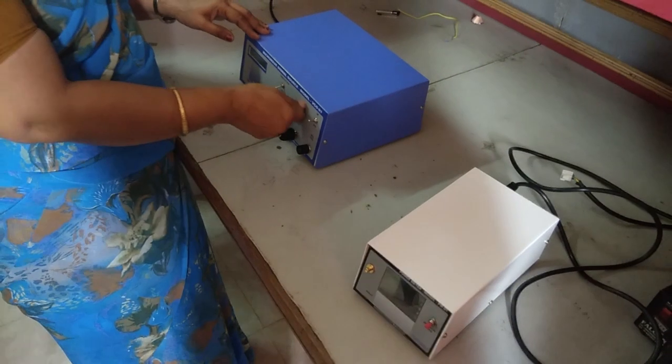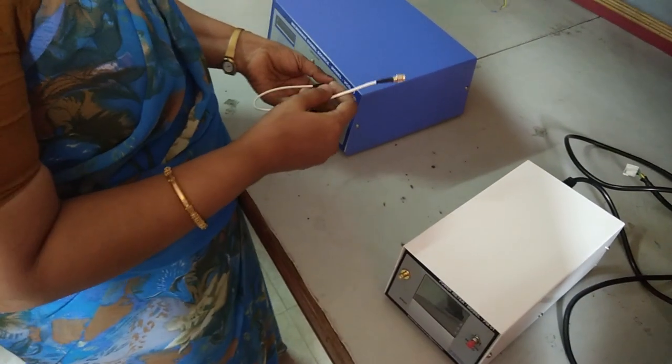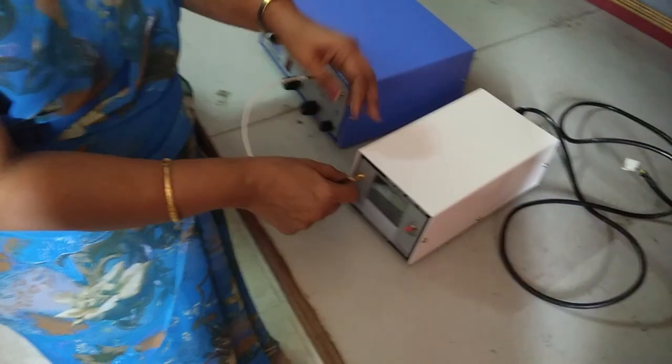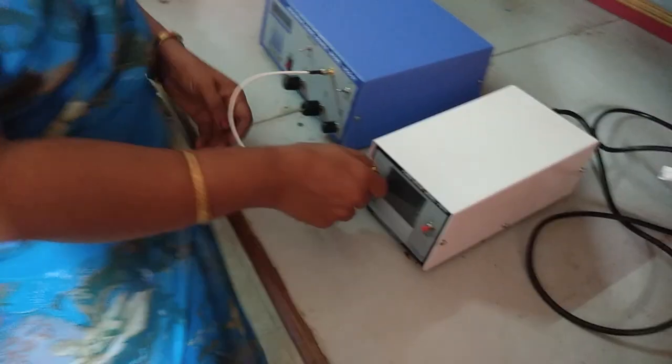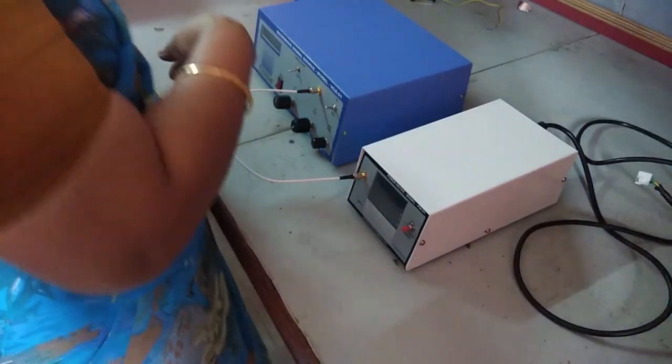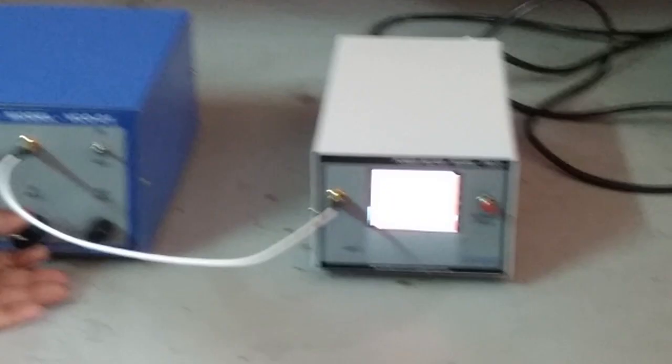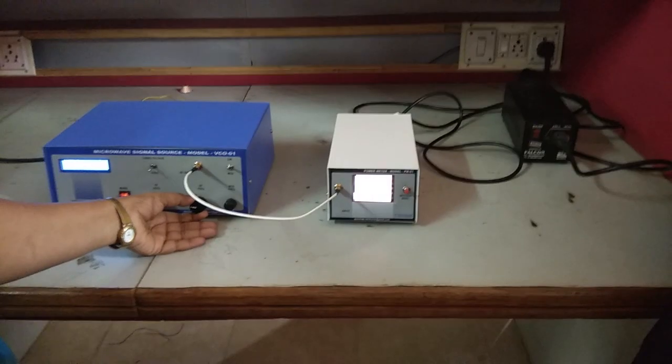We have our Yagi-Uda antennas here. The first one is the signal source and the next one is a power meter. We're going to connect them together with this metal wire. You can touch the metal part of the wire. Now we're going to turn on the power meter and signal source, and we're going to obtain PT from the following design.